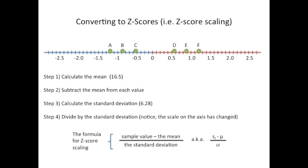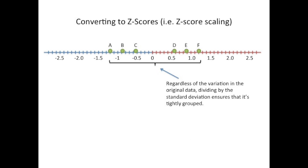The fourth step is to divide each data point by the standard deviation. Notice that the scale on the axis has changed. The data used to be spread from minus 8 to plus 8. Now it's between minus 1.2 and 1.2. For you math nuts out there, here's the formula for z-score scaling.